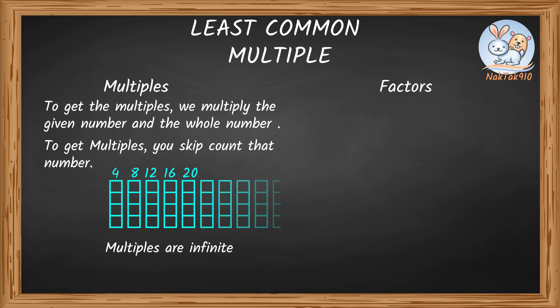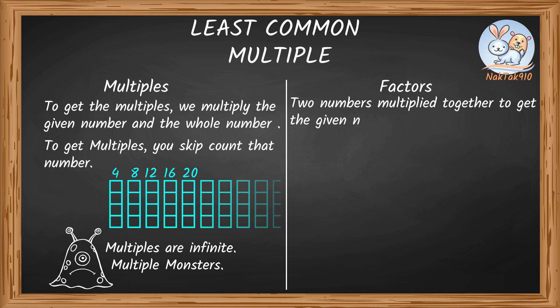Multiples are infinite, they go on and on. There are many, as in M, M as in monsters, multiple monsters. On the other hand, two numbers multiplied together to get the given number are called factors. You multiply the numbers to get the number in a question.